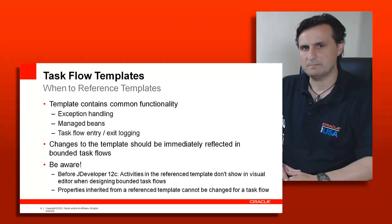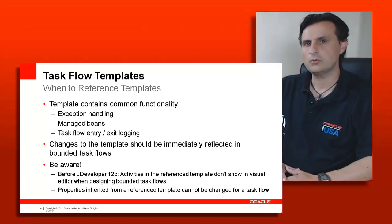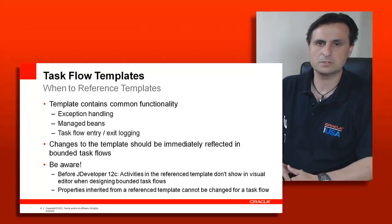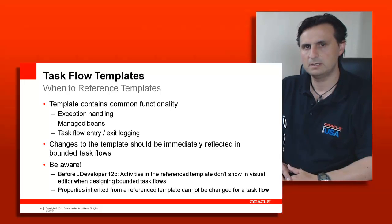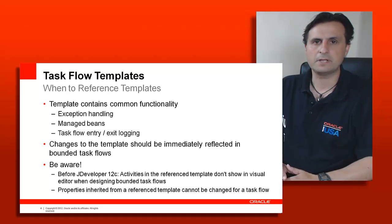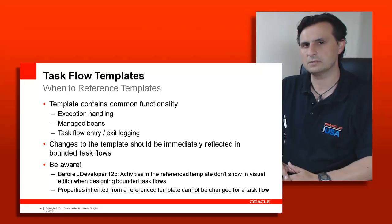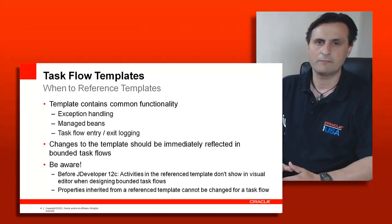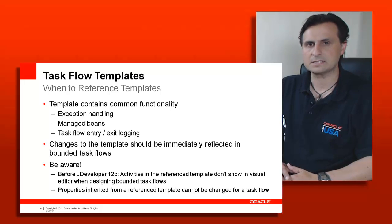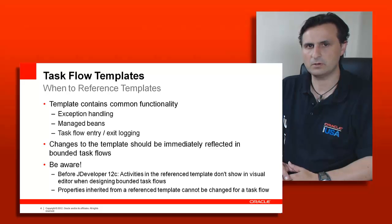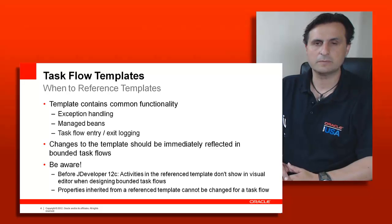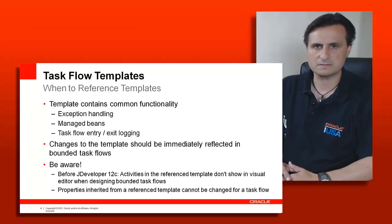The second use case is referencing the template. When you reference a template, you are not copying its markup into the bounded task flow you built. Instead, at runtime the artifacts become available to the bounded task flow referencing the template. This is typically used to create pre-configurations and predefined behavior for a consistent appearance. For instance, you can define logging functionality as a task flow template referenced by other bounded task flows, allowing you to easily change logging behavior only in the template, since a change there will have an immediate impact on all bounded task flows referencing it.